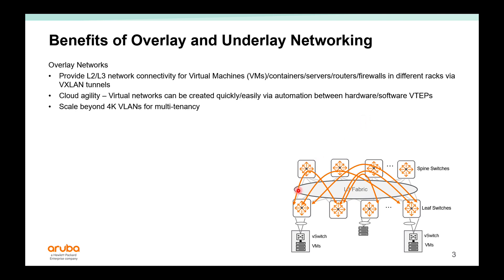The overlay networks provide both Layer 2 and Layer 3 connectivity for virtual machines, containers, servers, routers or firewalls in different racks. They provide cloud agility, because virtual networks can be created quickly and easily via automation between hardware and software VTEPs. And they scale beyond 4,000 VLANs for multi-tenancy.